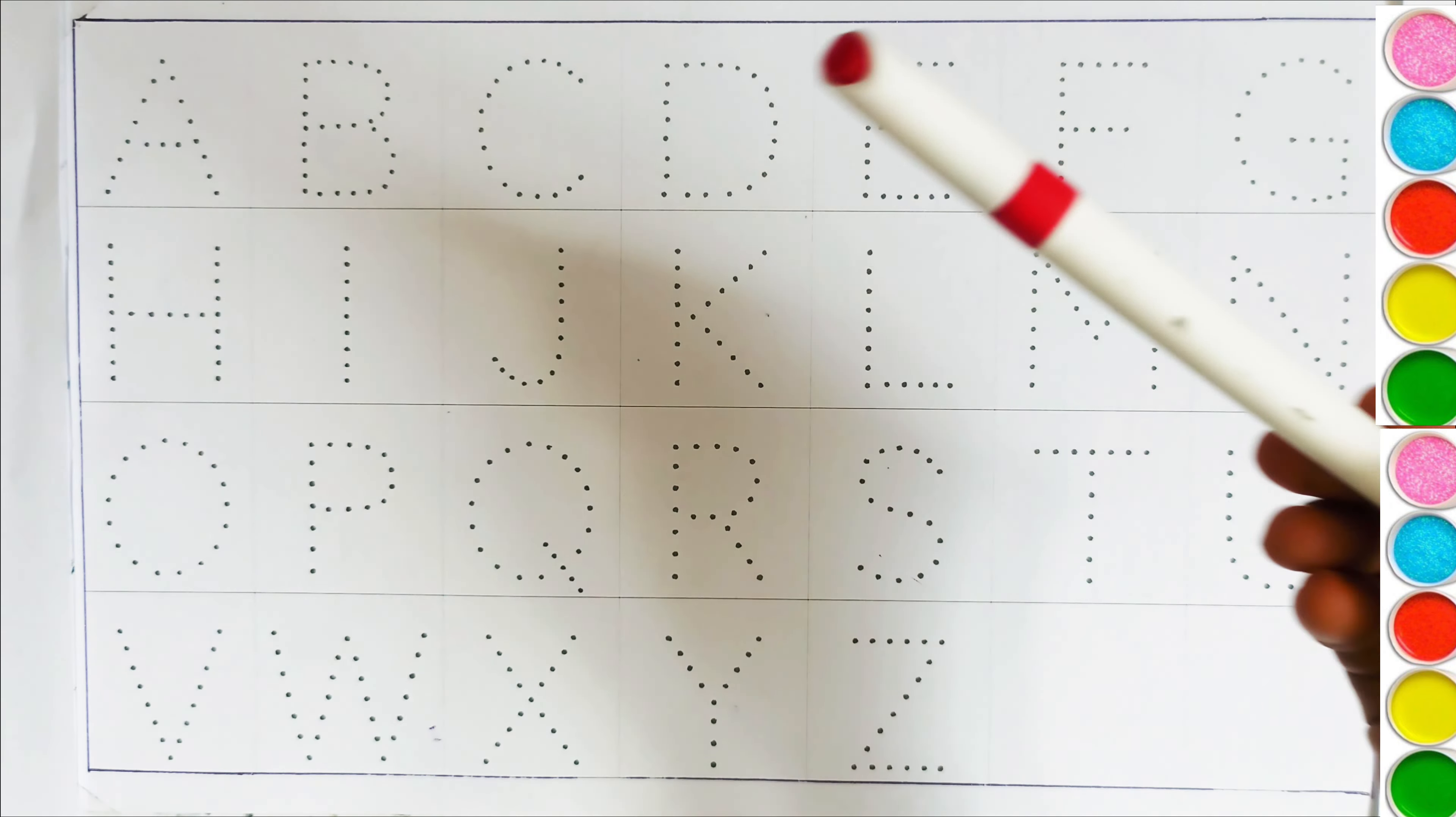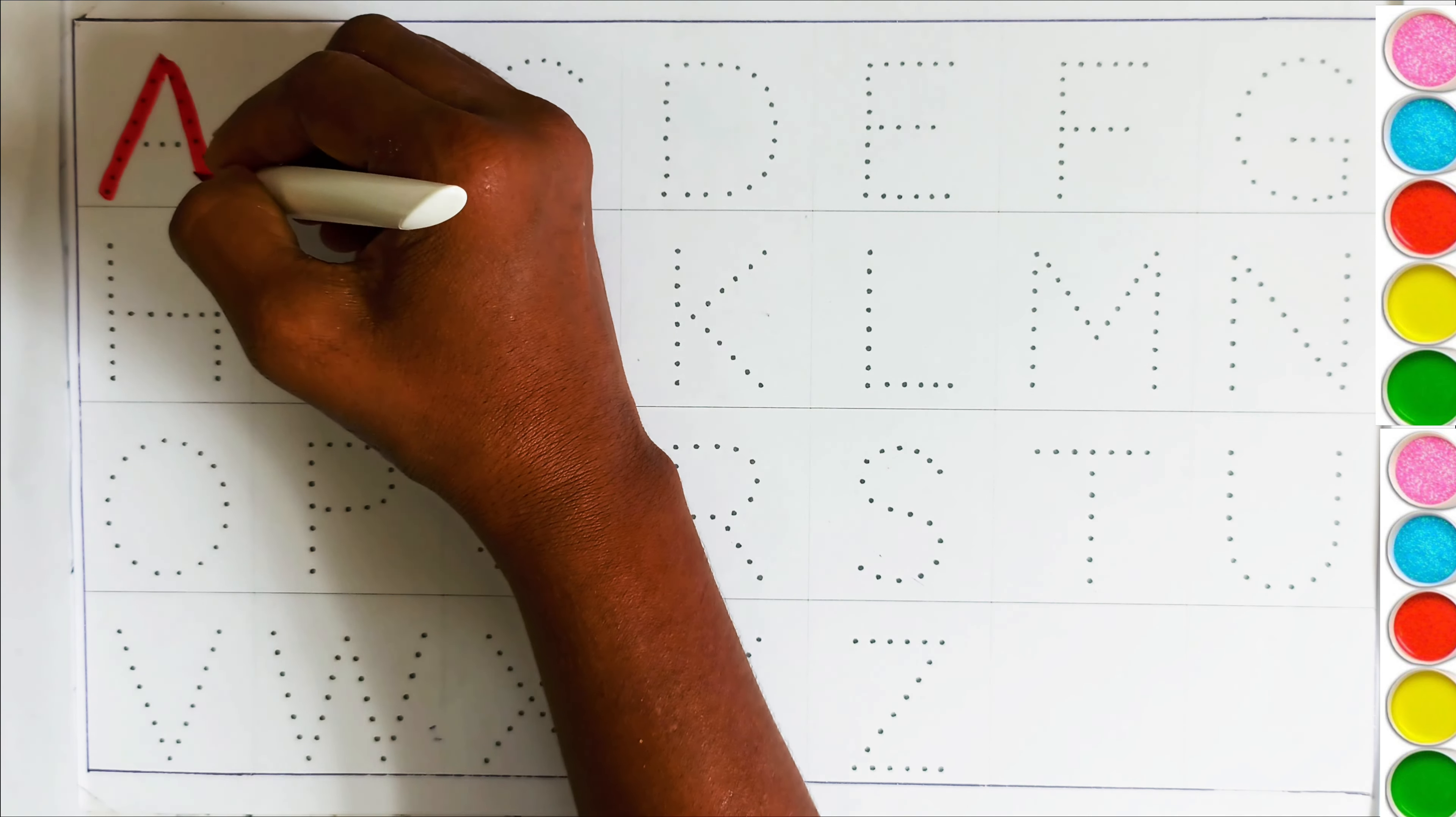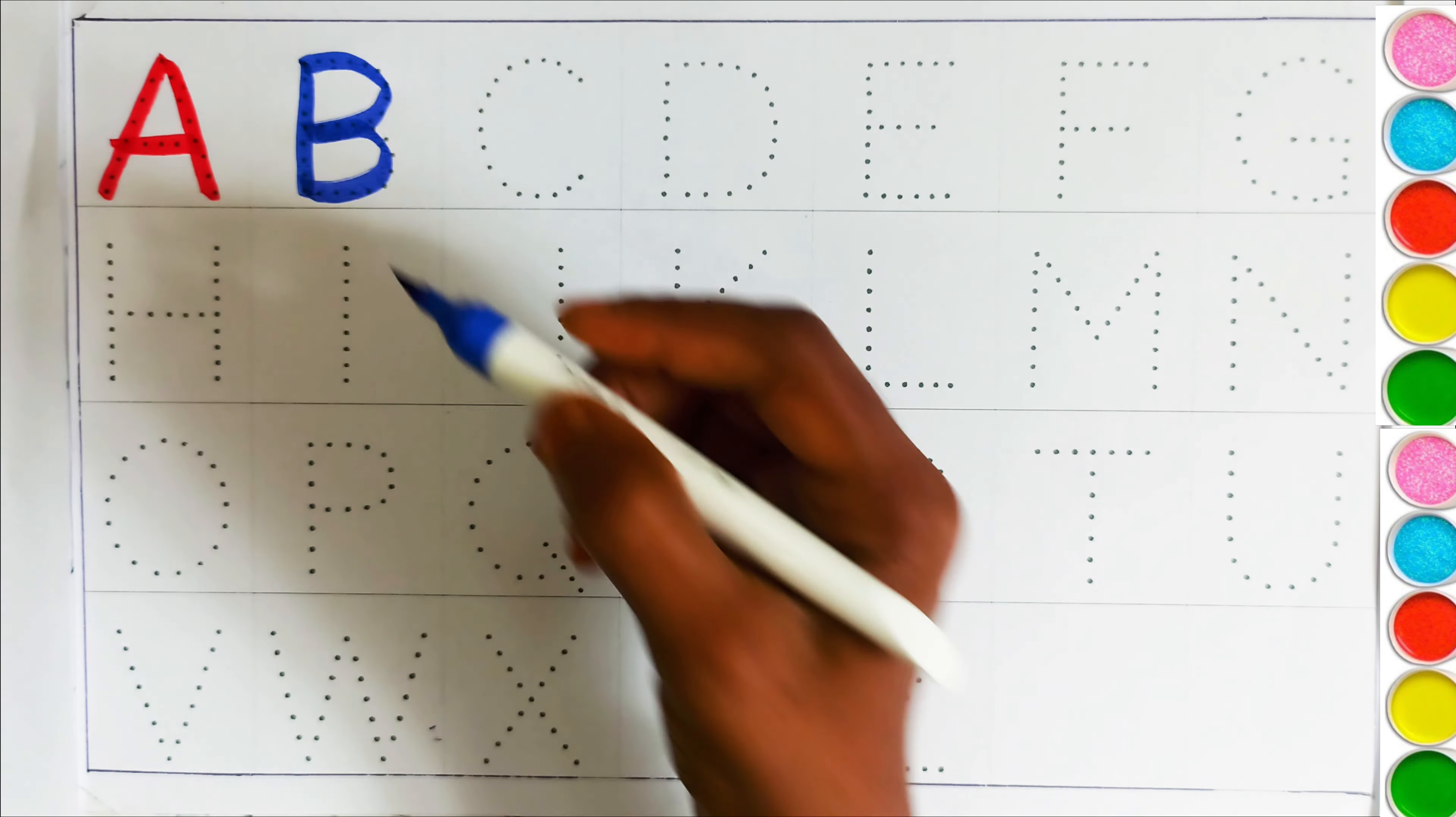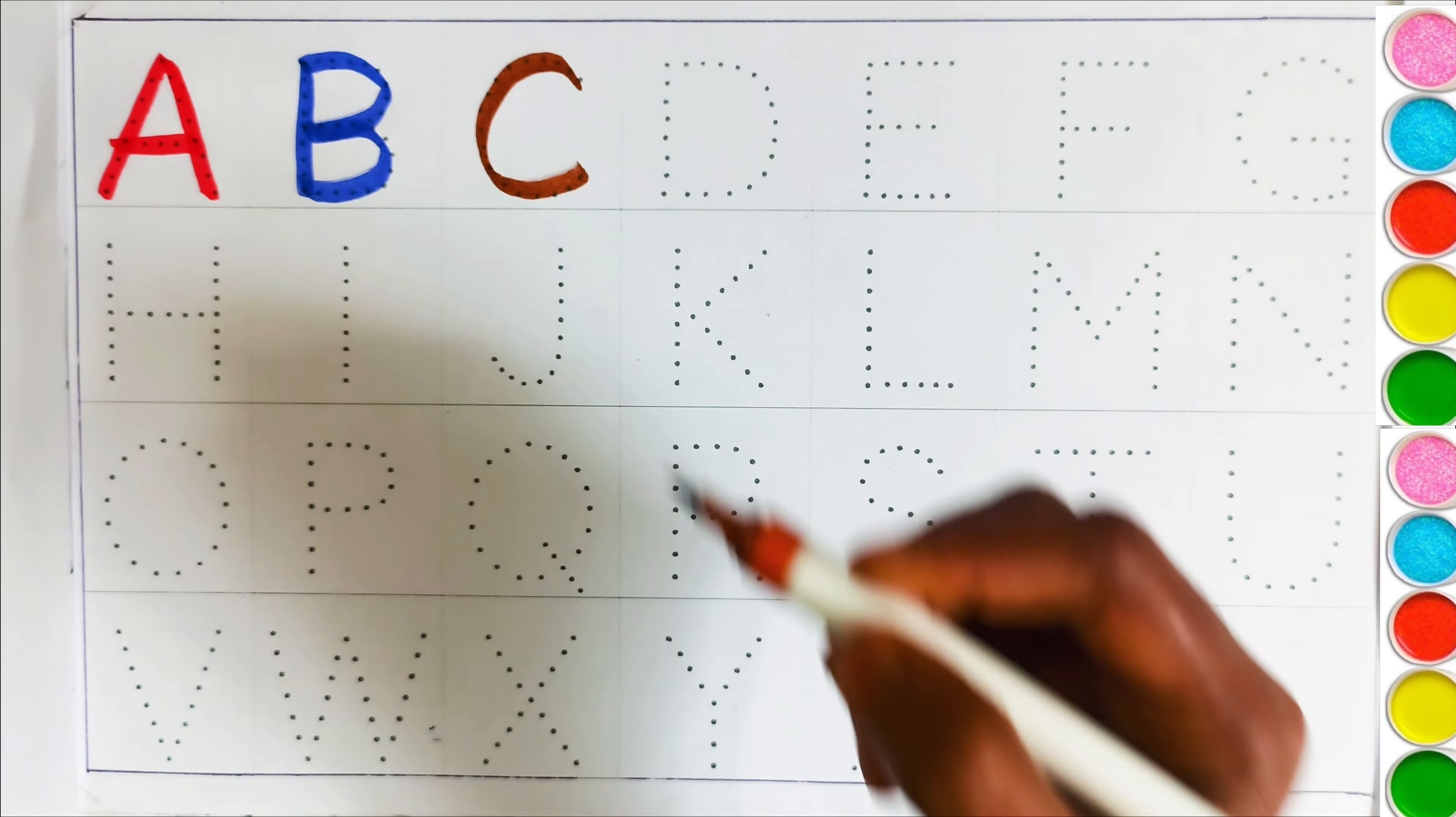This is red color. A, A for apple. This is blue color. B, B for banana. This is brown color. C, C for cat.